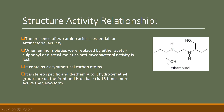Asymmetrical carbon atoms are those atoms which have four different functional groups attached to them. In this structure, we have two asymmetrical carbon atoms — the first one and the second one — both asymmetrical because they each have four different functional groups attached to them.